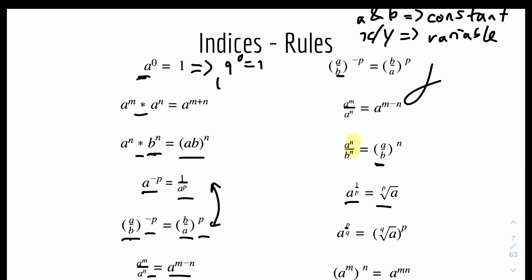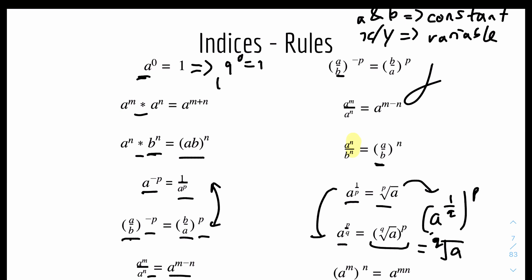The next rule extends this: A to the power of P over Q. Just ignore P first — treat it as (A to the 1 over Q) to the power of P. Applying the previous rule, A to the 1 over Q is the Q-th root of A, and then you raise that to the power of P. So the numerator P is the overall power and the denominator Q is the root — whether cube root, square root or any other root.